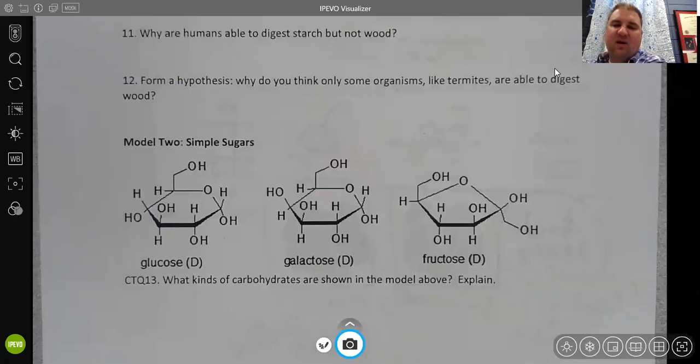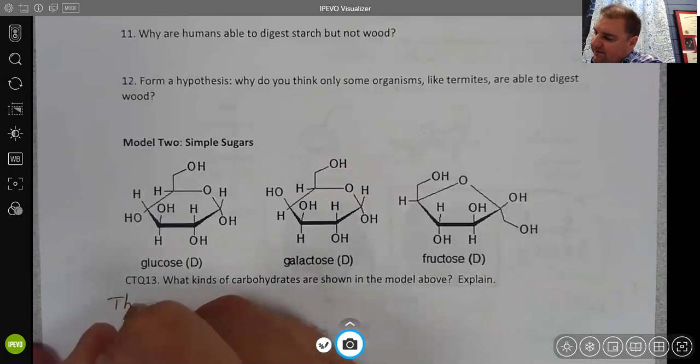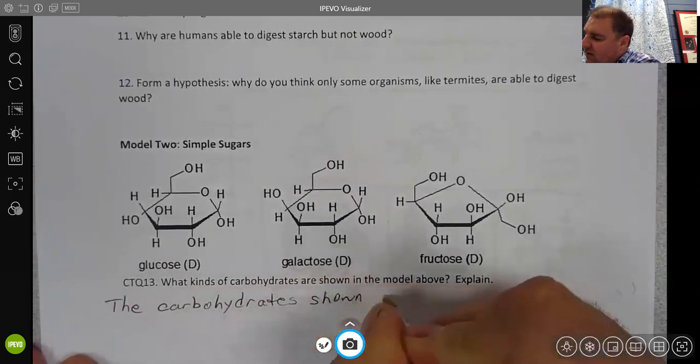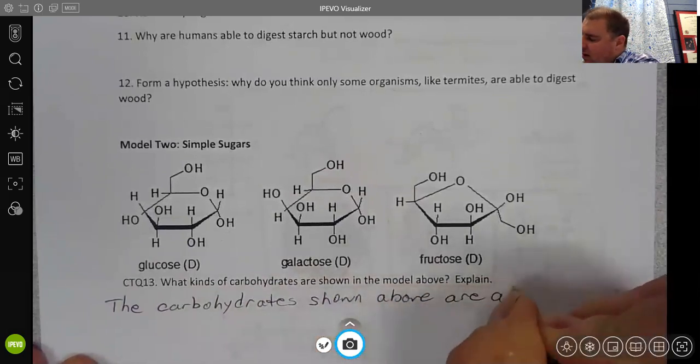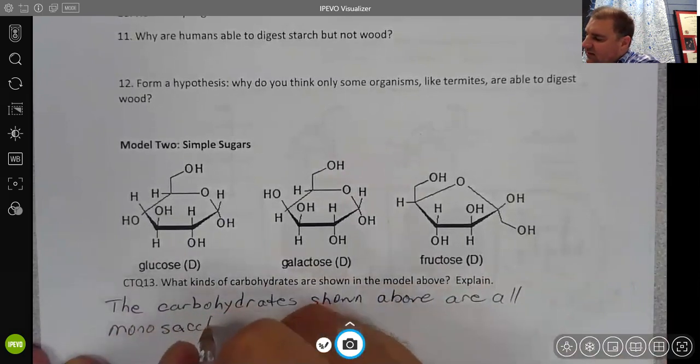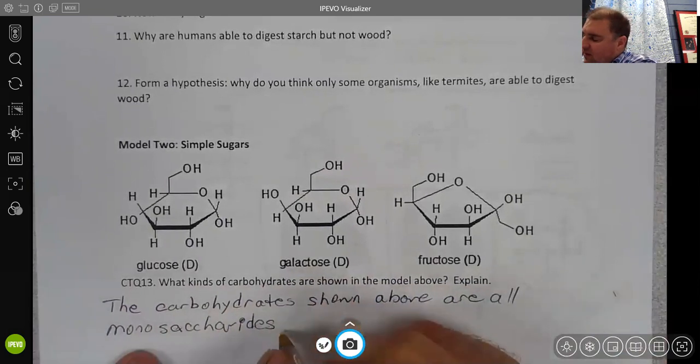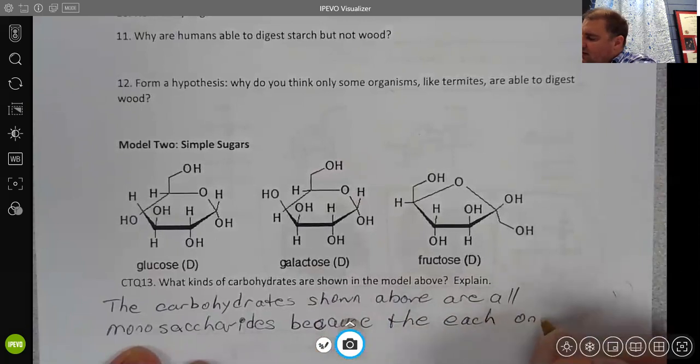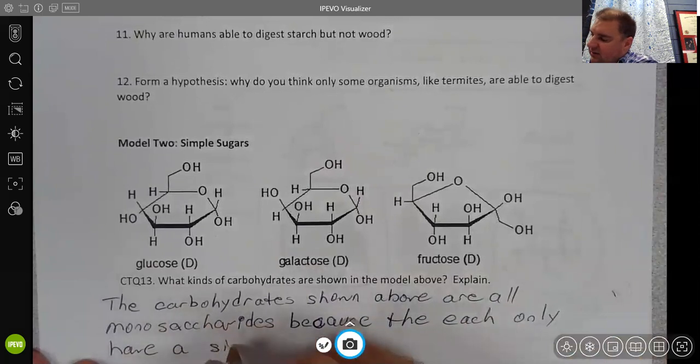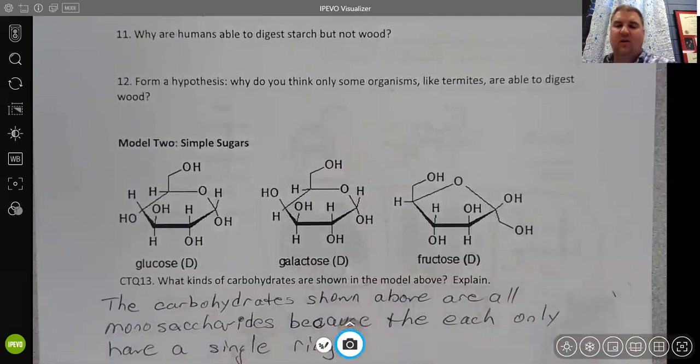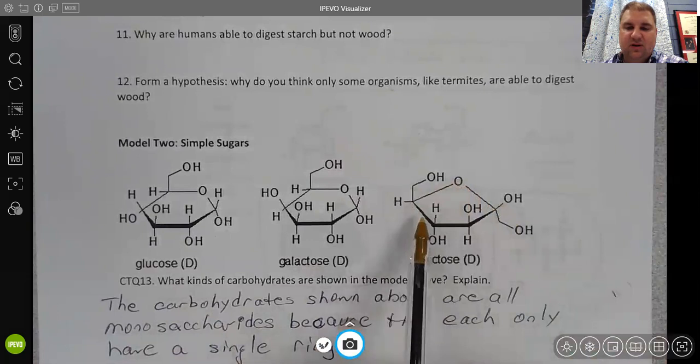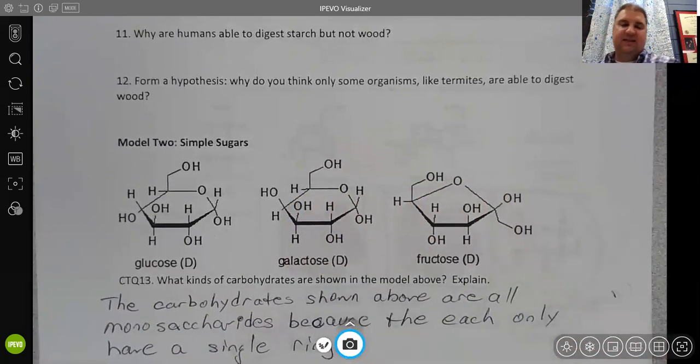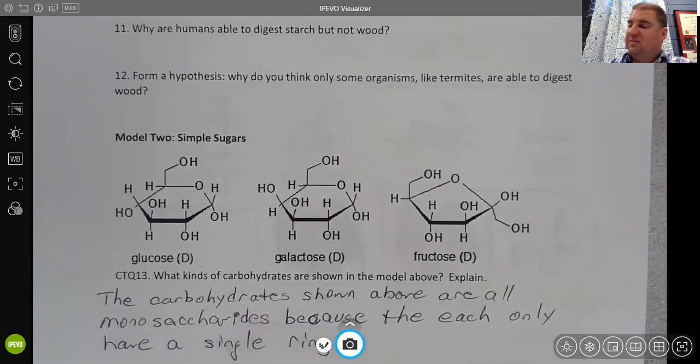So our answer here, remember we want complete sentences whenever possible, is that the carbohydrates shown above are all monosaccharides because they each only have a single ring. Where the ring is this circle or circular loop that connects several atoms together in the molecule. Whenever you see a single ring in a carbohydrate, that will always be a monosaccharide.